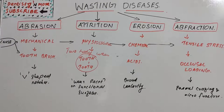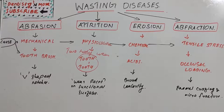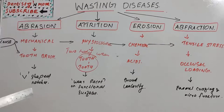Erosion most commonly presents as broad, shallow, saucer-shaped defects involving enamel and dentine, with no sharp line angles and poorly defined margins. The surface appears smooth and polished. It occurs on facial or lingual surfaces, but usually on the lingual surface of maxillary anteriors, because in patients with GERD (gastroesophageal reflux disease), stomach acids frequently contact the palatal surface of maxillary anteriors.